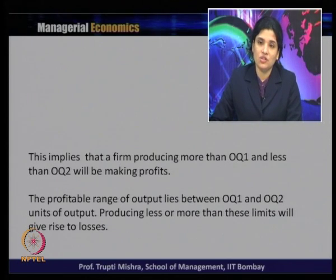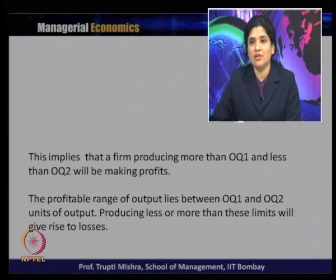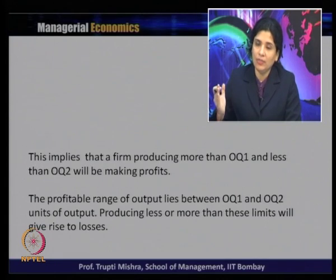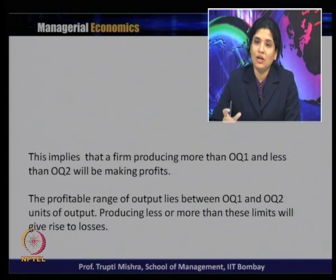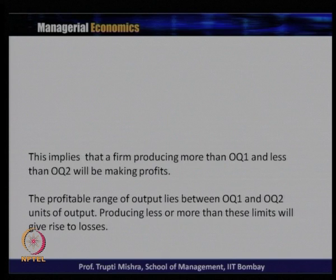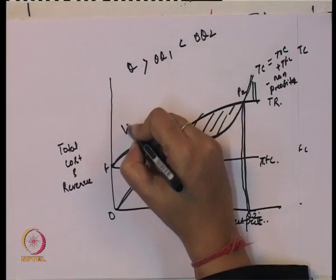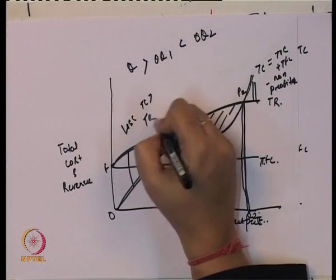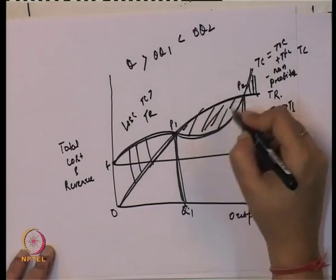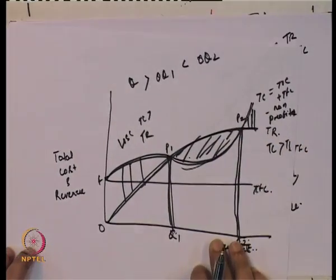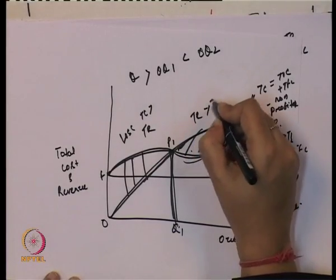The essential difference between linear and non-linear break-even analysis: in the linear case the profitable range of output is unlimited, but in the non-linear case there is a defined upper and lower limit. Producing less than Q1 or more than Q2 leads to losses, while the range between Q1 and Q2 is profitable since total revenue exceeds total cost.